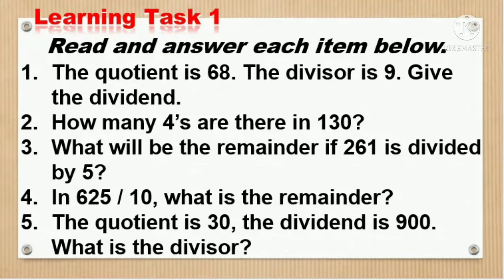Number 1 The quotient is 68, the divisor is 9, give the dividend. 68 times 9 is 612.